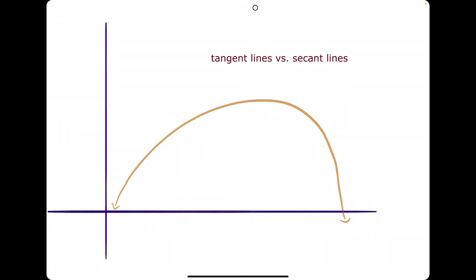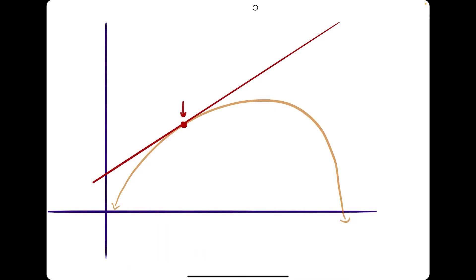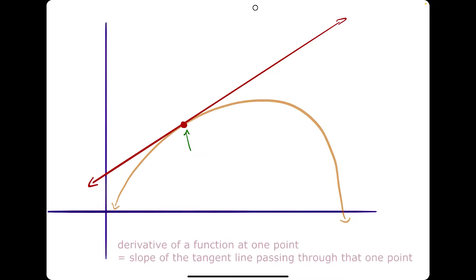Let's talk tangent lines versus secant lines. A tangent line is a line that intersects the function at one point — it kind of has this skimming the surface behavior, skimming the function at that one point and keeping it moving. An important fact about tangent lines is this: if you were to find the derivative of this orange curve at a point, the derivative of the function at that point would be equal to the slope of the tangent line passing through the function at that point.